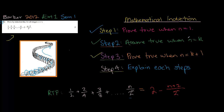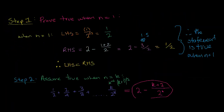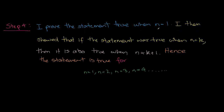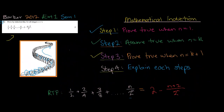So we've proved it true when n equals 1, assumed it's true when n equals k, and using that assumption we've proved it true when n equals k plus 1. The conclusion: I proved the statement was true for n equals 1. I then showed that if the statement is true for n equals k, then it is also true for n equals k plus 1. Hence it's true for all integers n ≥ 1. And I think — humans will die one day, our planet will get swallowed by our sun, but now that we've proved this statement, it will always be true and will outlast our species. Something I think is very interesting. Alright guys, have a good night, I'll see you in the next vid.